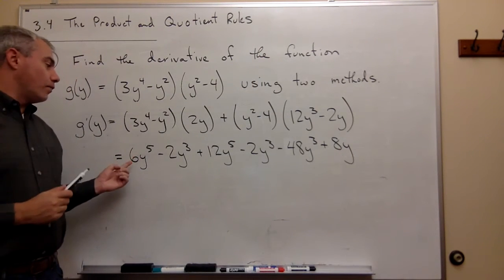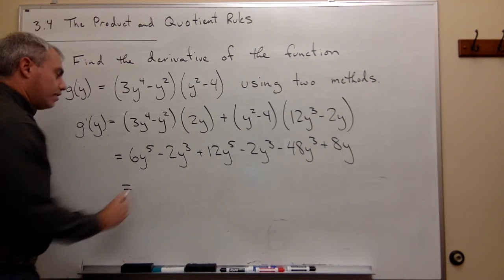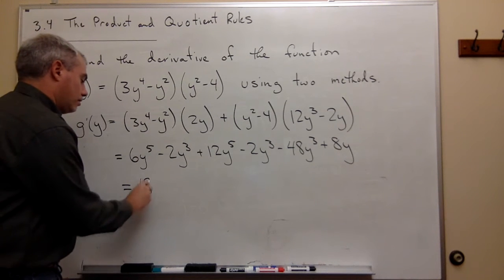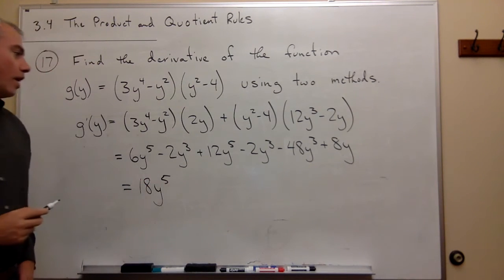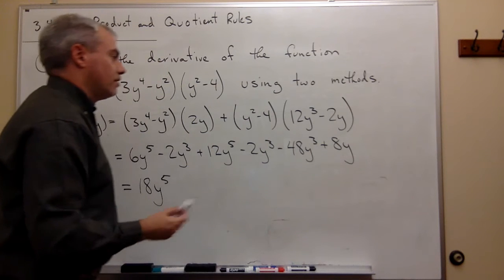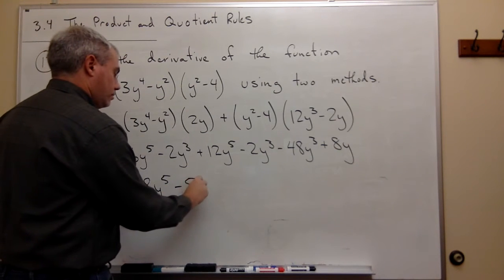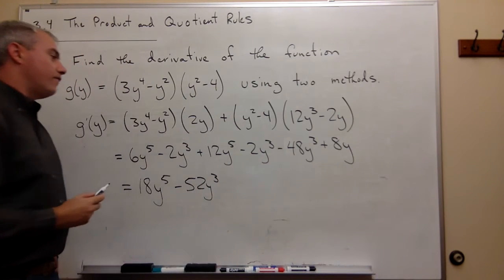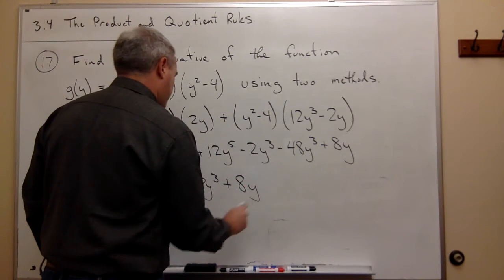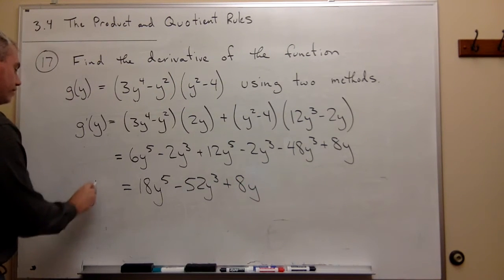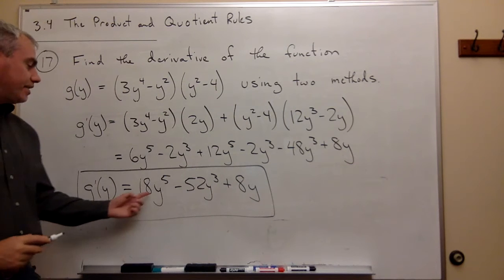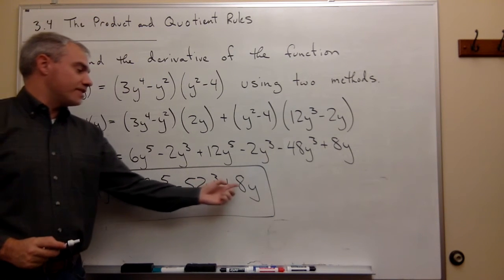Okay, so we've got this right now. Let's simplify that down a little bit. y^5, so I've got 6 of them plus 12 of them is 18y^5. Then y^3. I've got -2, -4, -52y^3. And then finally, we've got our y's, and the only one is +8y. So my derivative, g'(y), is equal to 18y^5 - 52y^3 + 8y.